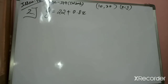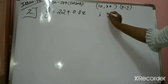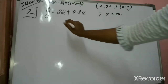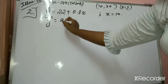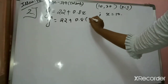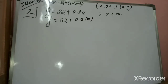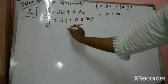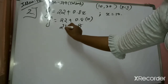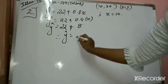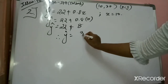The question also asks: what can you deduce from the value of the error? Your X value is given as 10, so substitute X=10 into the equation: Y cap equals 22 plus 0.8 times 10. Multiplying 0.8 into 10 is 8, plus 22. Therefore Y cap equals 30.